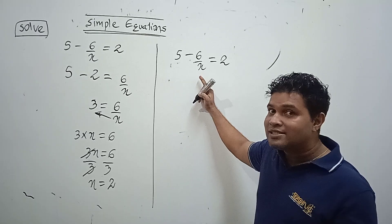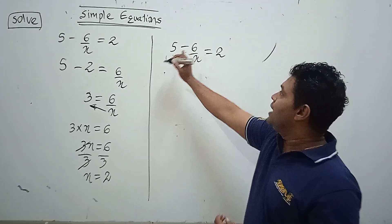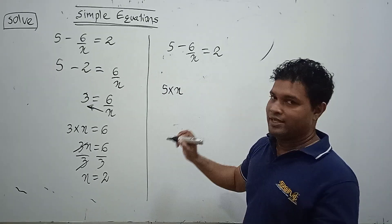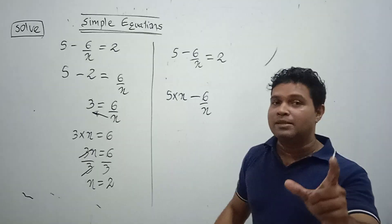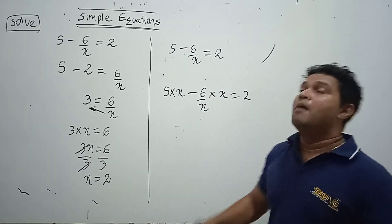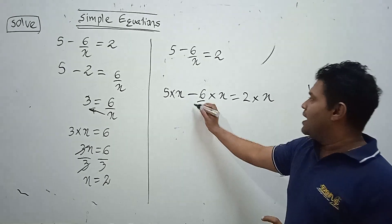This one and only denominator is x. Therefore, by this x you can multiply every term. You have to get 5 multiplied by x, you have to get this whole 6 over x multiplied by x, you have to get this 2 right-hand side multiplied by x.